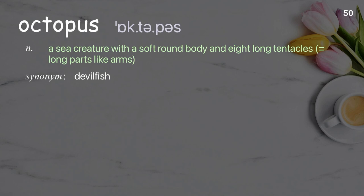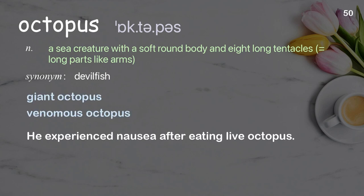Octopus. A sea creature with a soft round body and eight long tentacles. Examples: giant octopus, venomous octopus. He experienced nausea after eating live octopus.